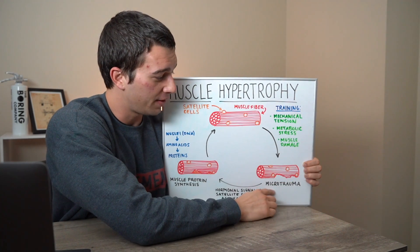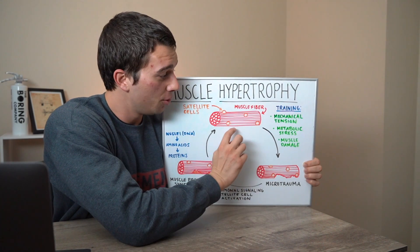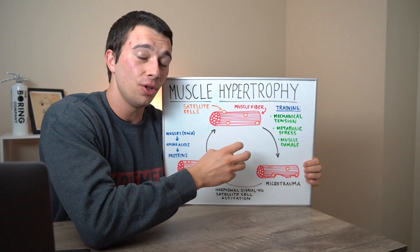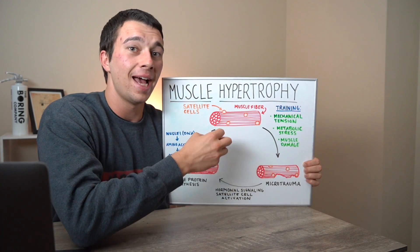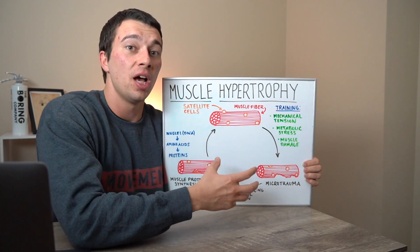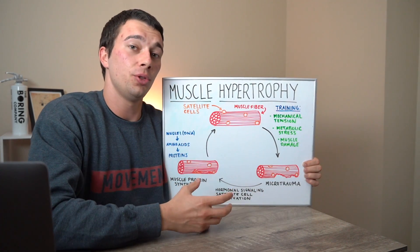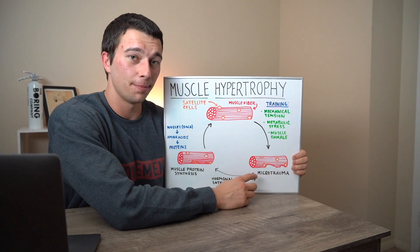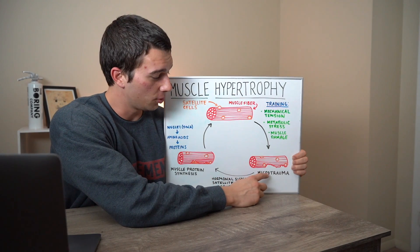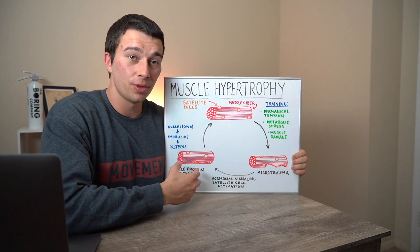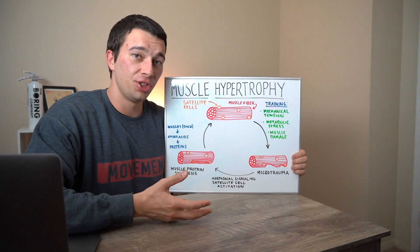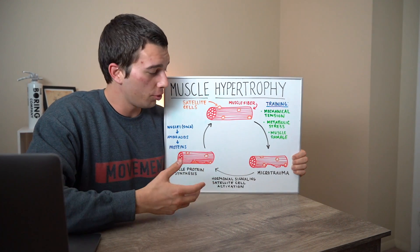Once we've done training and the muscle fiber has some microtrauma, the actin and myosin within those myofibrils have had some structural damage. What we need to do next is muscle protein synthesis. Once microtrauma has occurred at the myofibrillar level, we actually have a hormonal cascade involving things like testosterone, IGF-1, and growth hormone that signal that there's been damage.